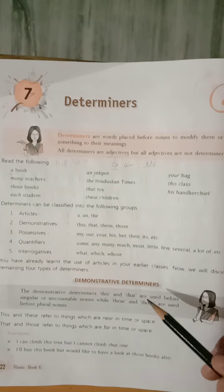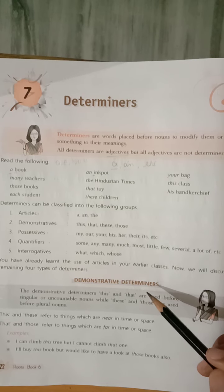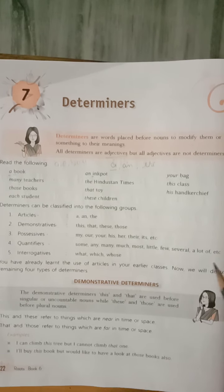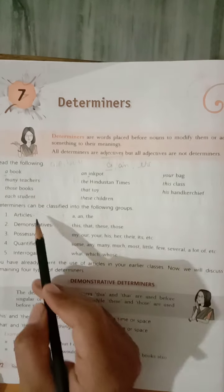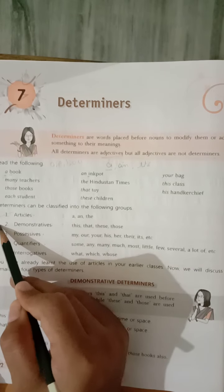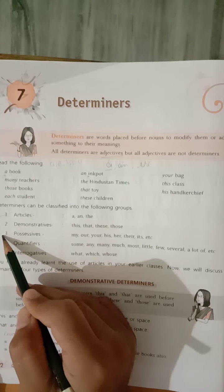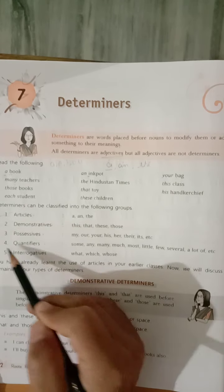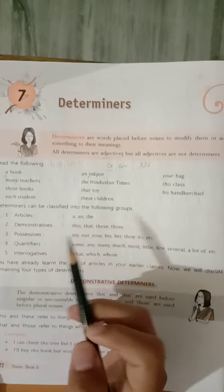Determiners can be classified into the following groups. There are four types of determiners: first is the article, second is demonstrative, after that possessive, and then quantifiers.